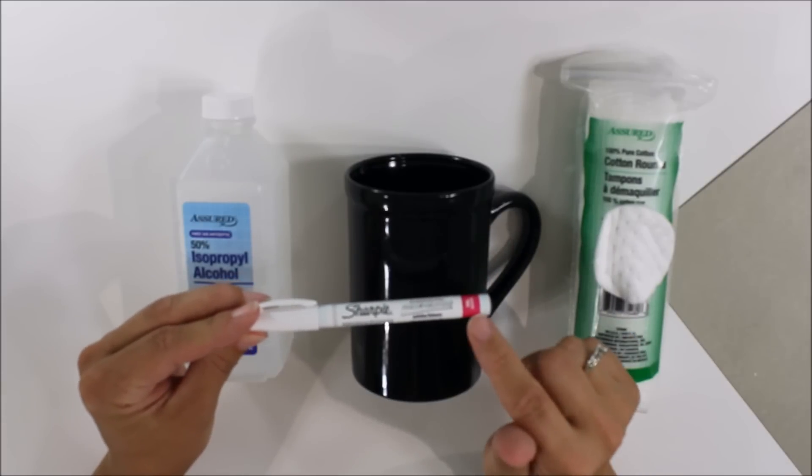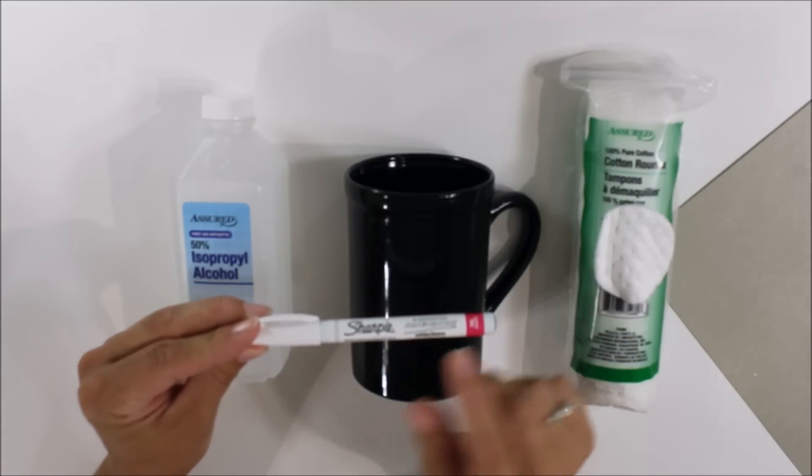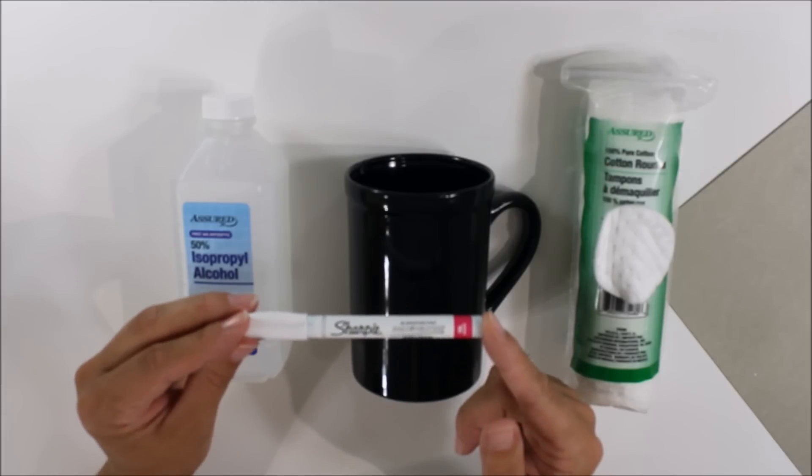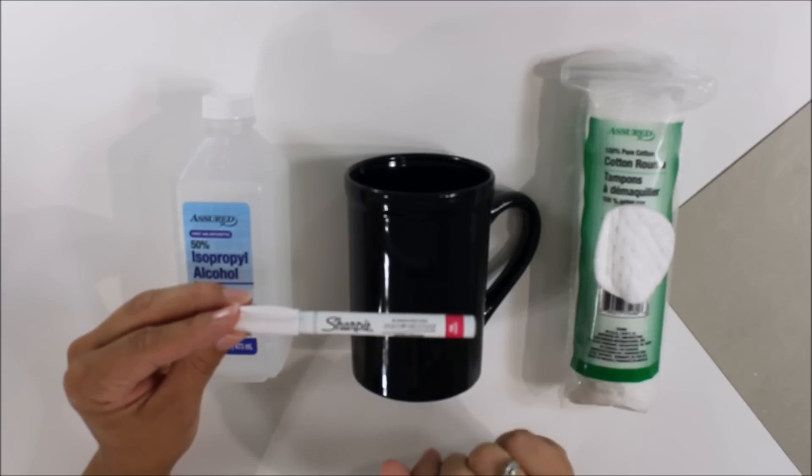You can tell that they are oil-based by the pink band on the end and also their white barrels. You want to be sure to use the oil-based, not the regular Sharpies, and please stay tuned for the baking instructions at the end of this video.